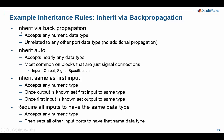We'll talk about four common simple cases for data type inheritance rules. The first is inherit via back propagation. What this means is that the output of the block will accept any numeric data type. There is no additional propagation back to the input ports — that's a common misunderstanding. The data type for the output is set and no additional data types are set beyond just the output type.